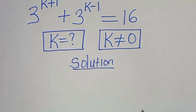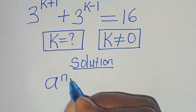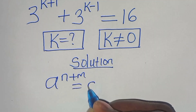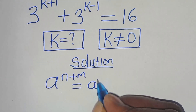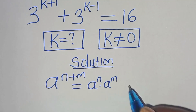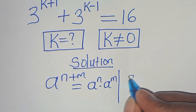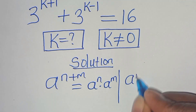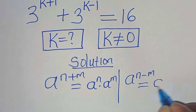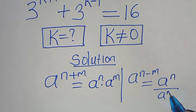This exponential equation involves two properties. First, a to the power of n+m can be expressed as a^n multiplied by a^m. Second, a to the power of n−m can be expressed as a^n divided by a^m.